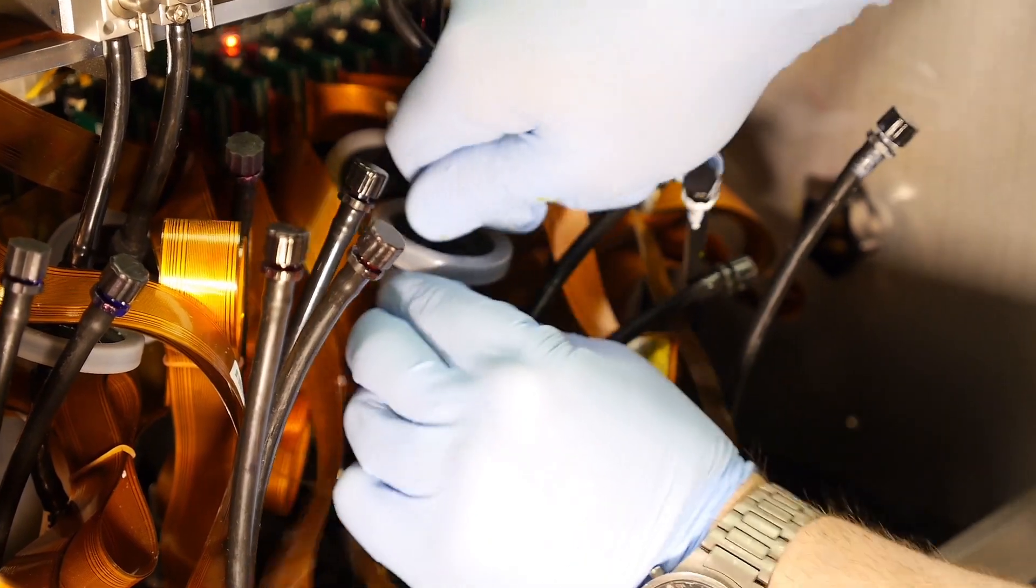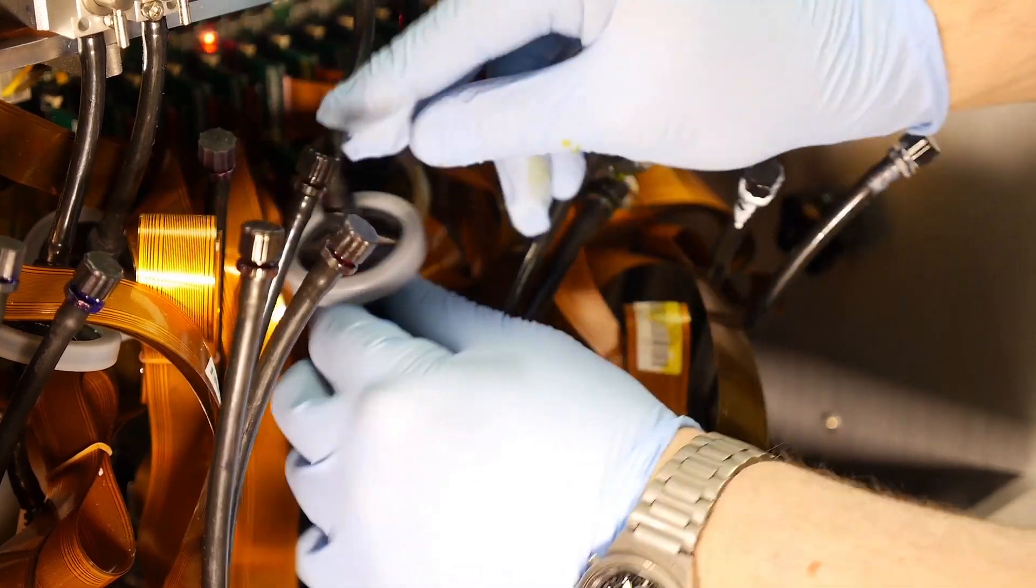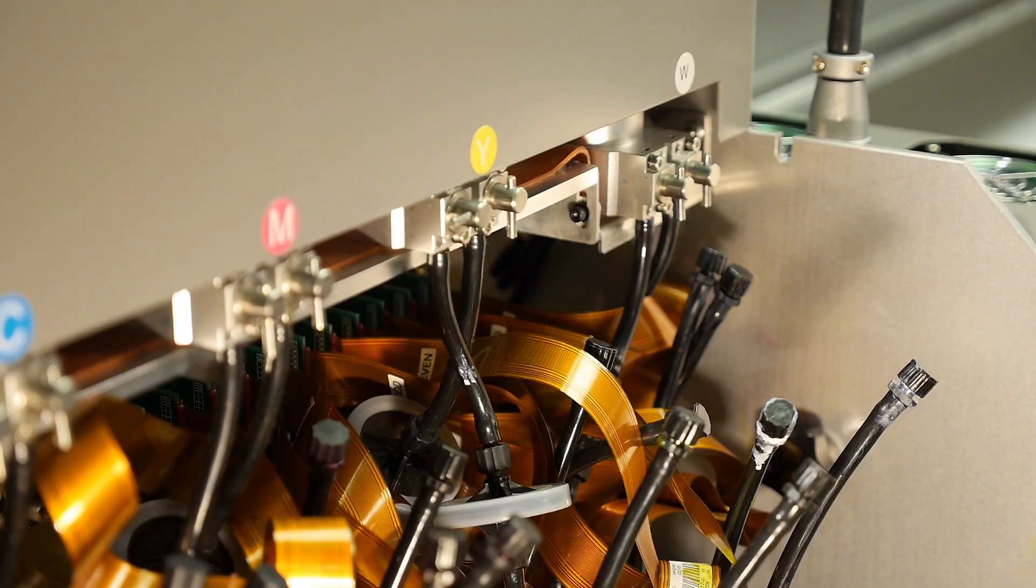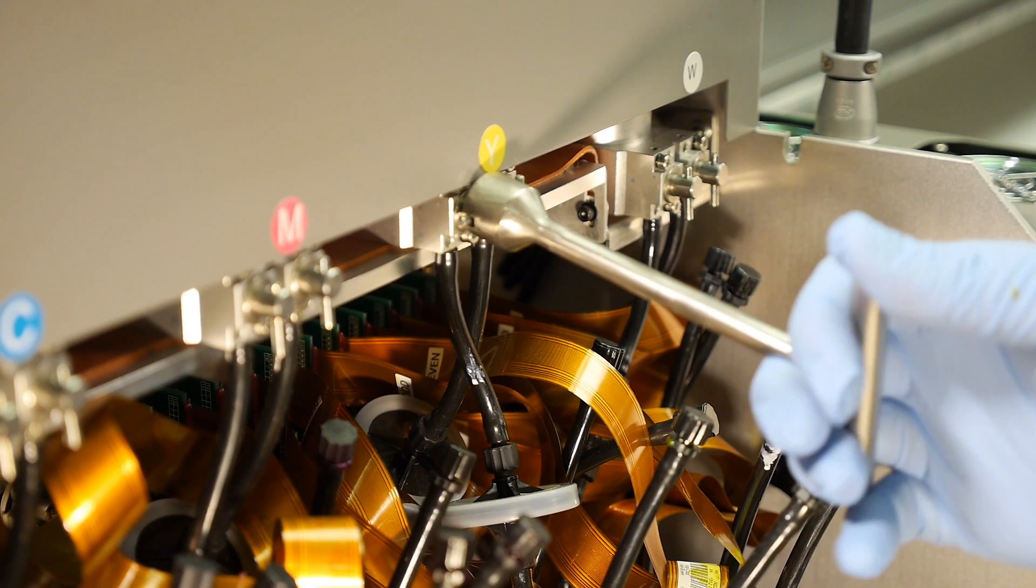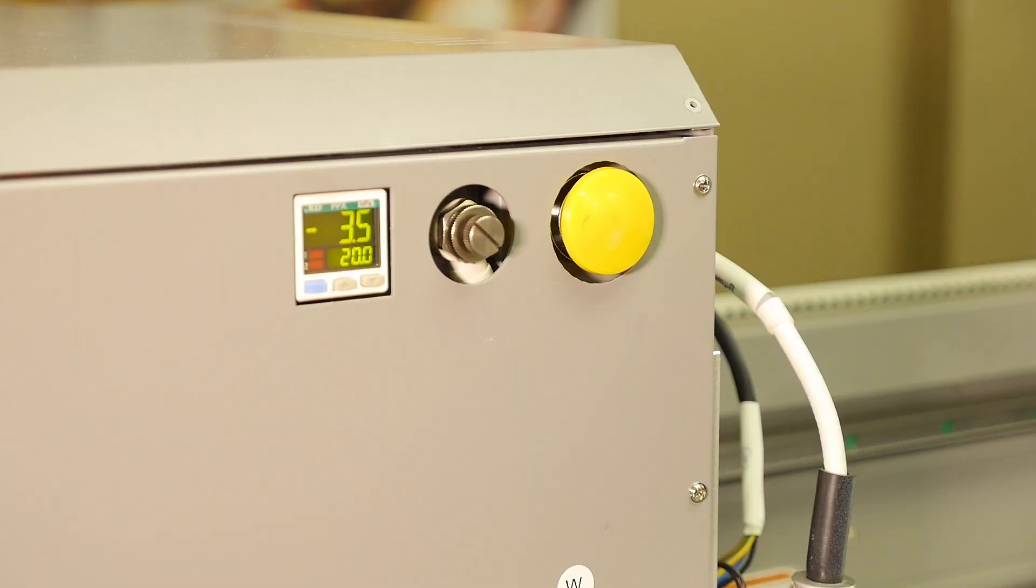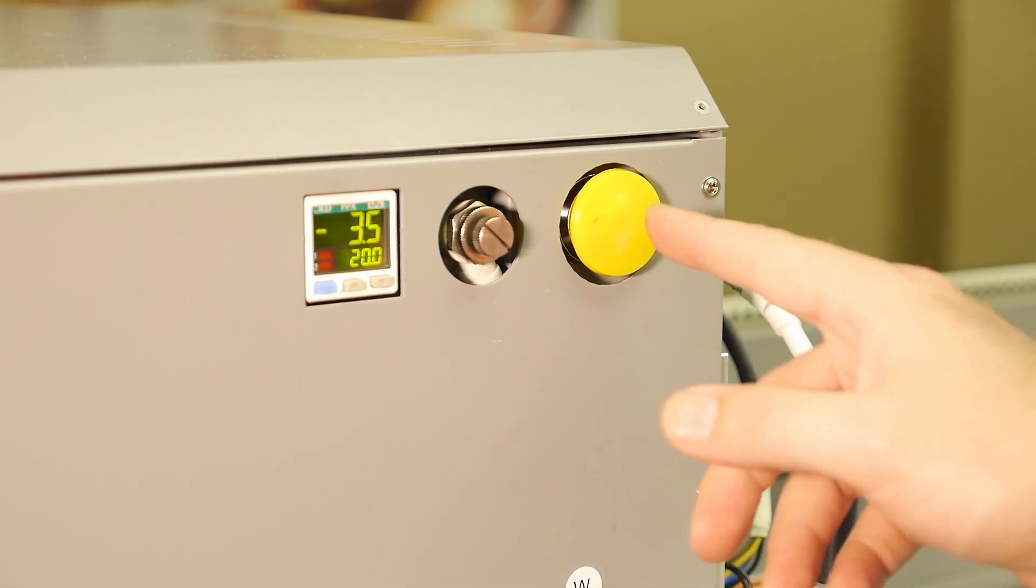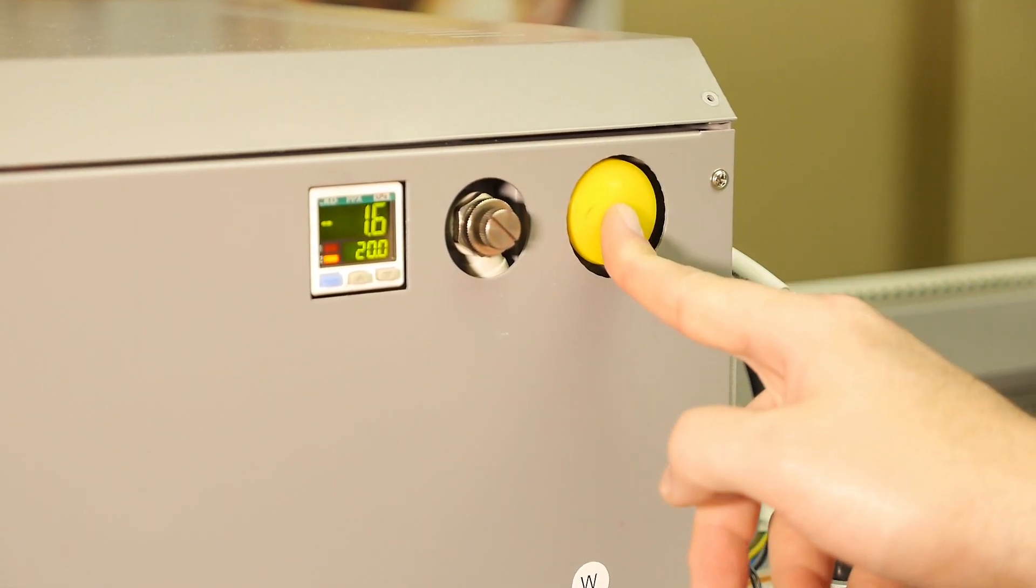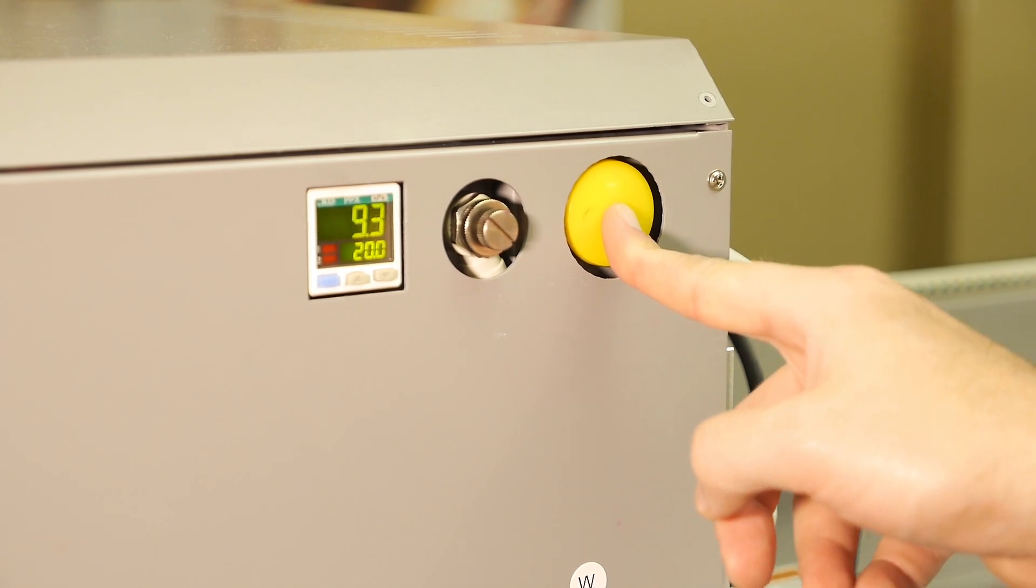Connect your filters back to the printhead tubing. Then open the sub-tank valve. To ensure positive pressure to the printhead, press and hold the purge button until pressure reaches positive 15.